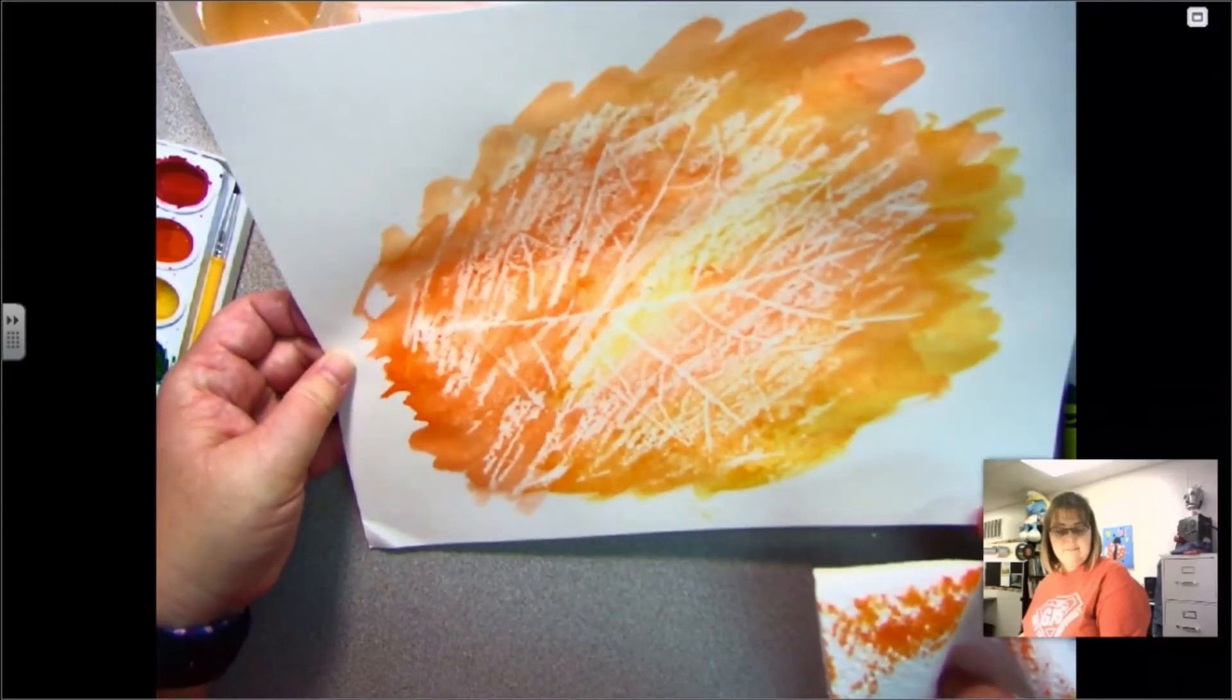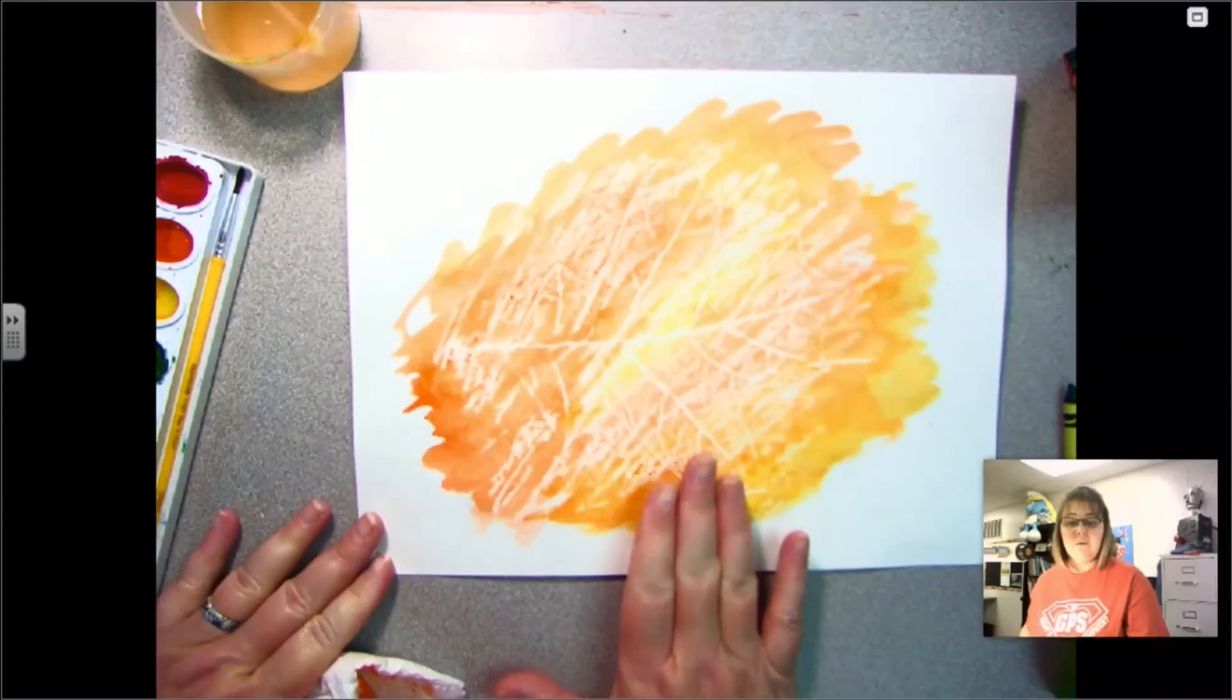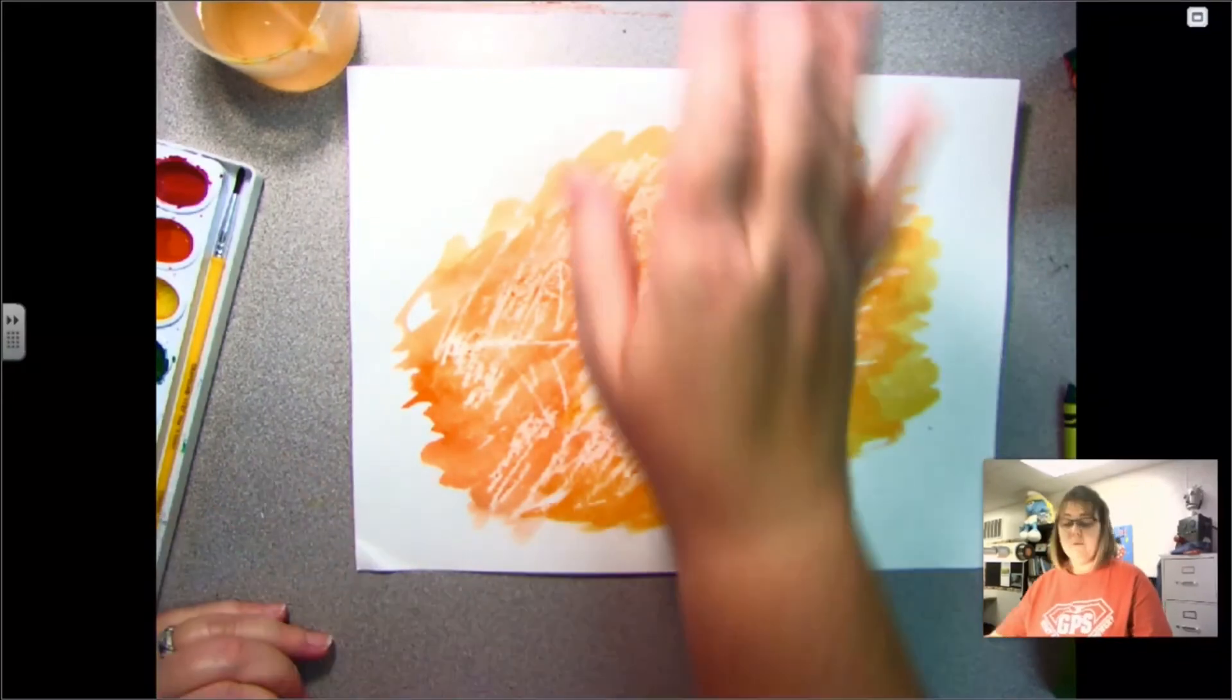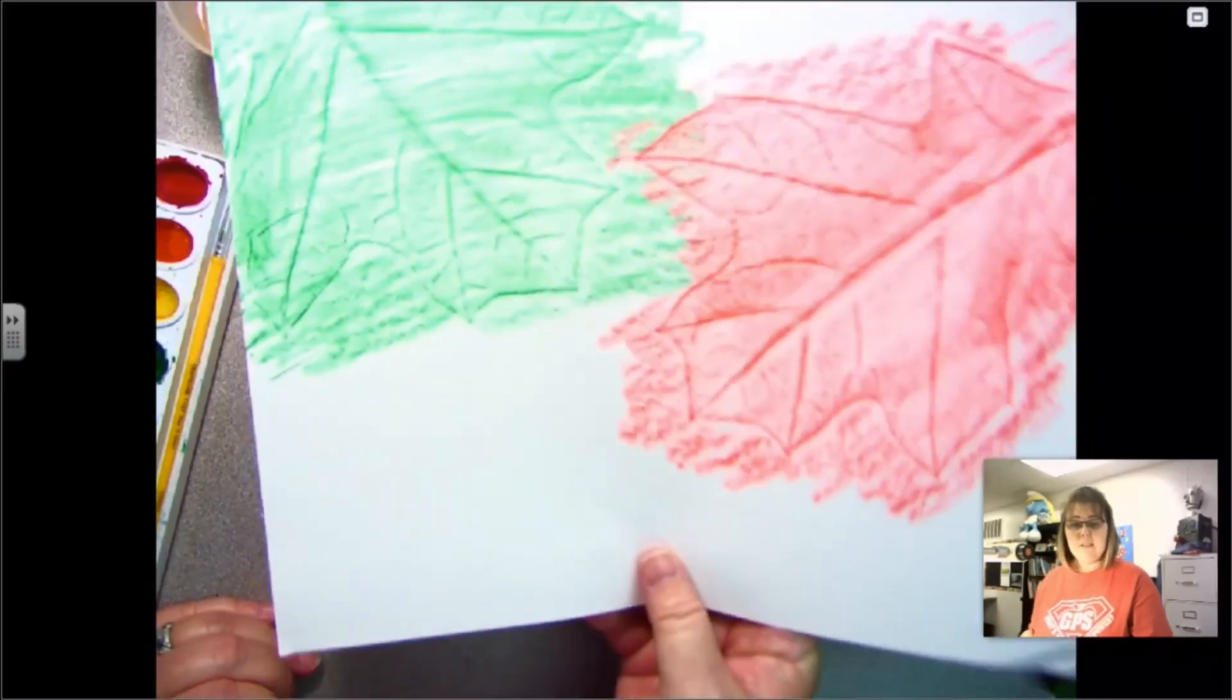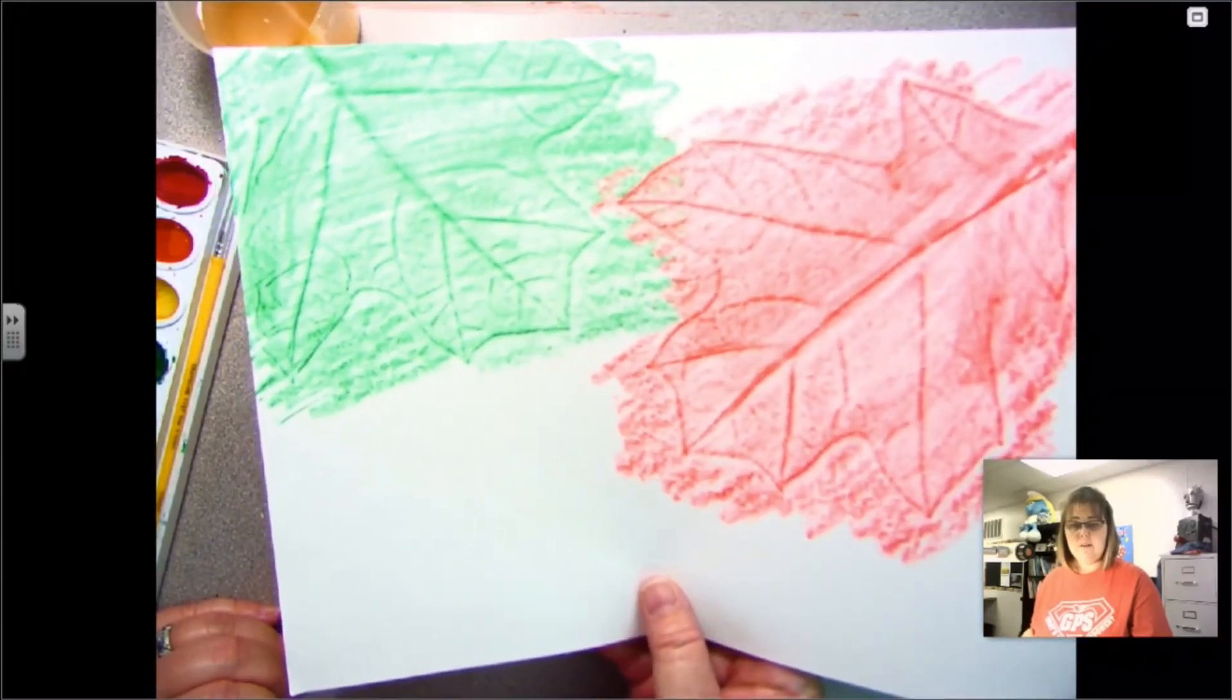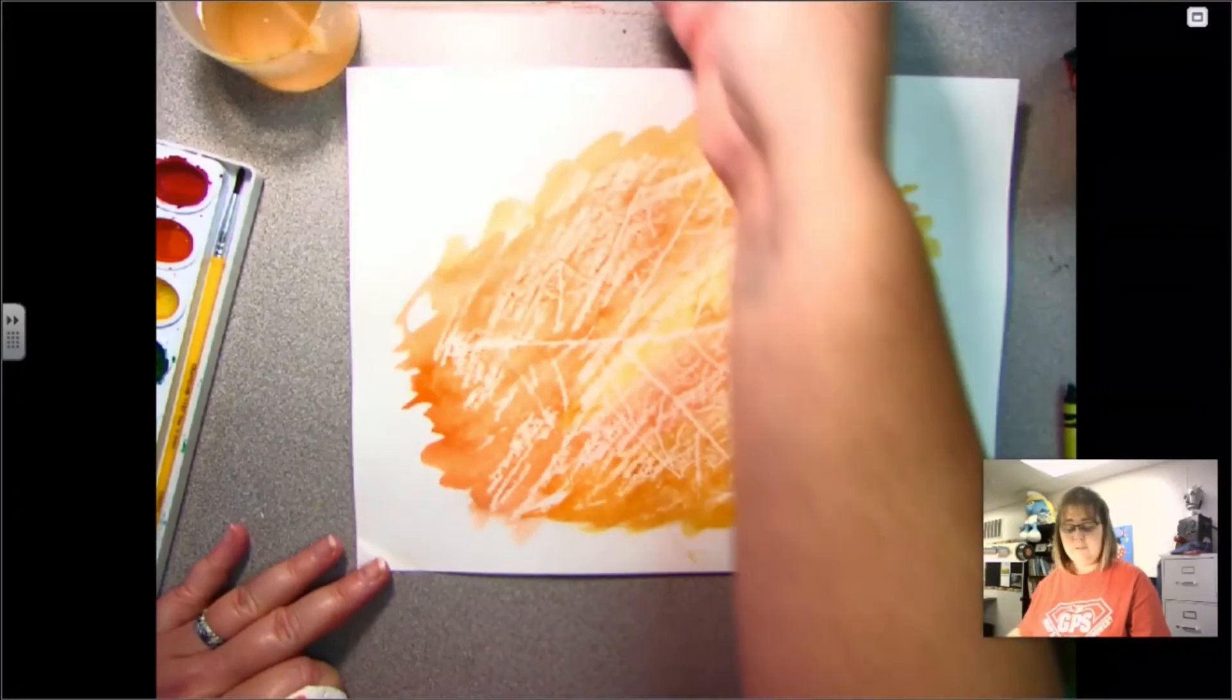So what I would like for you to do is I would like for you to experiment with your rubbing—rubbing your leaves to get that texture on your paper.